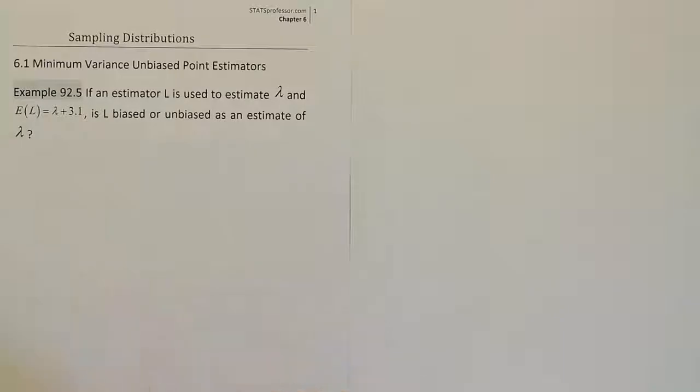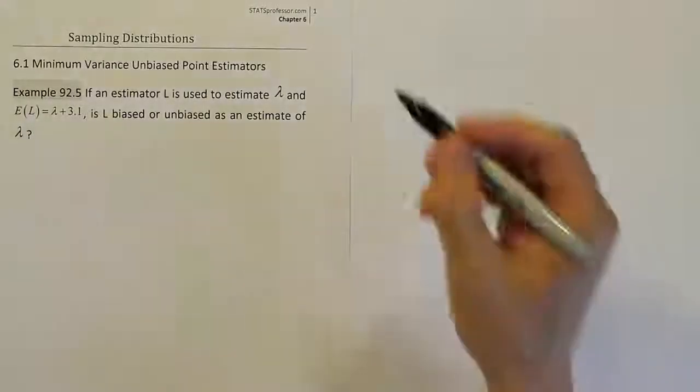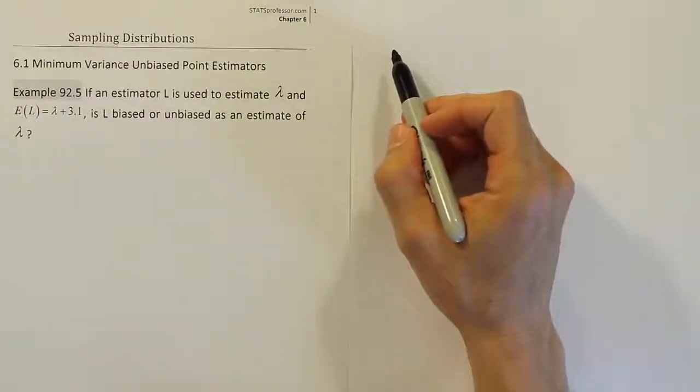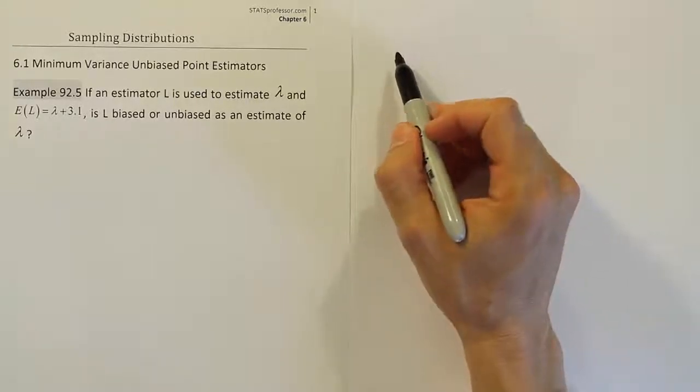This problem tests you on the definition of biased versus unbiased. What you want to remember here is very simple. If something is unbiased, it means that its expected value is equal to the thing it's trying to estimate.